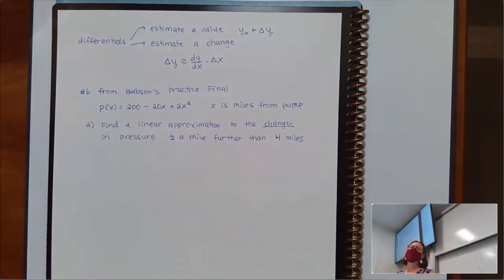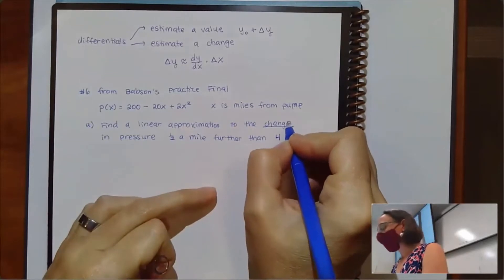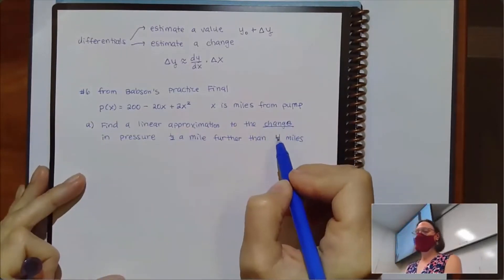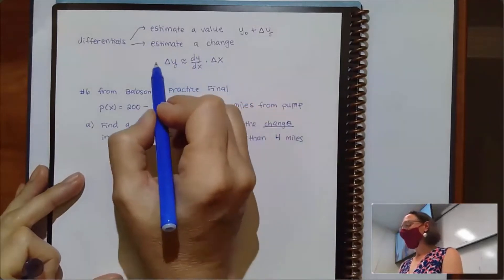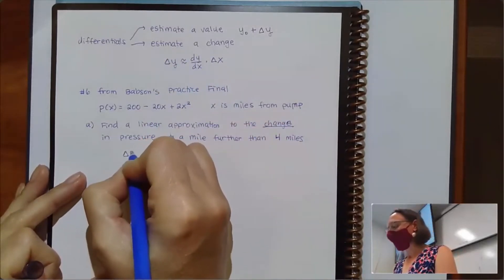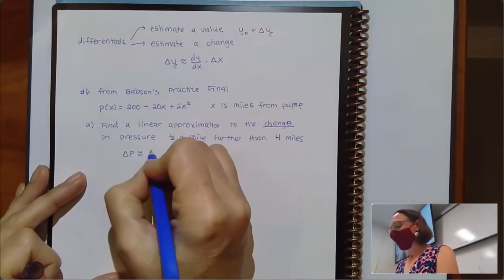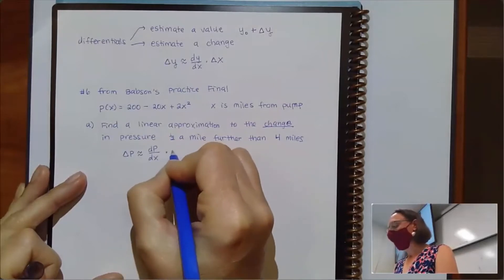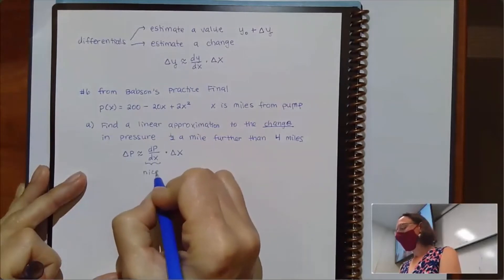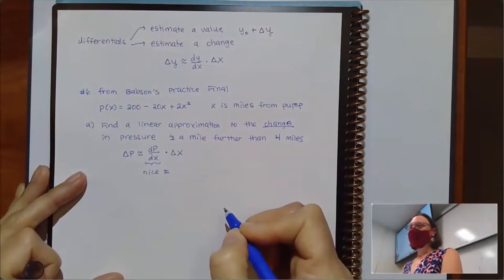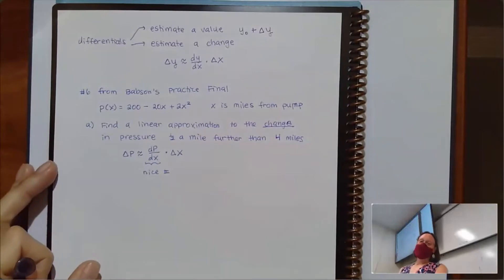So the first part of this question asks us to find a linear approximation to a change in pressure half a mile further than four miles. That is strangely worded, but it's worded strangely to try to fit into this formula for a differential. So the key piece here from my perspective, the key word, is that we're using a linear approximation for the change in pressure. And because we're looking for a linear approximation to the change in pressure, we're saying that our change in pressure will be approximately our derivative times our delta x.